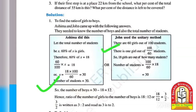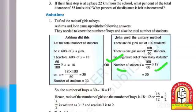John used the unitary method: if there are 60 girls out of 100 students, then 1 girl corresponds to 100/60 students. So for 18 girls, number of students = 100/60 × 18 = 30. In this way both methods give the total number of students as 30, from which we can find the number of boys and girls.